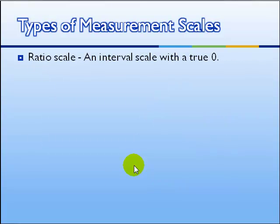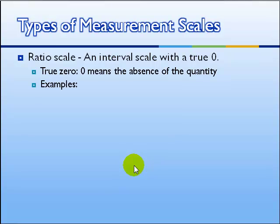A ratio scale has all of the properties of an interval scale, but it also has a true zero, and therefore, it can have ratios. A true zero means the absence of the quantity being measured. Here are some examples.